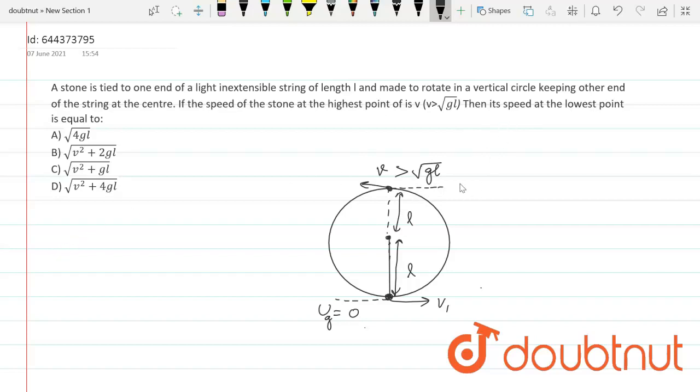So the potential energy can be written as MG into 2L because the vertical displacement is 2L. So now I can write initial potential energy plus initial kinetic energy of the system can be written as final potential energy plus final kinetic energy of the system.